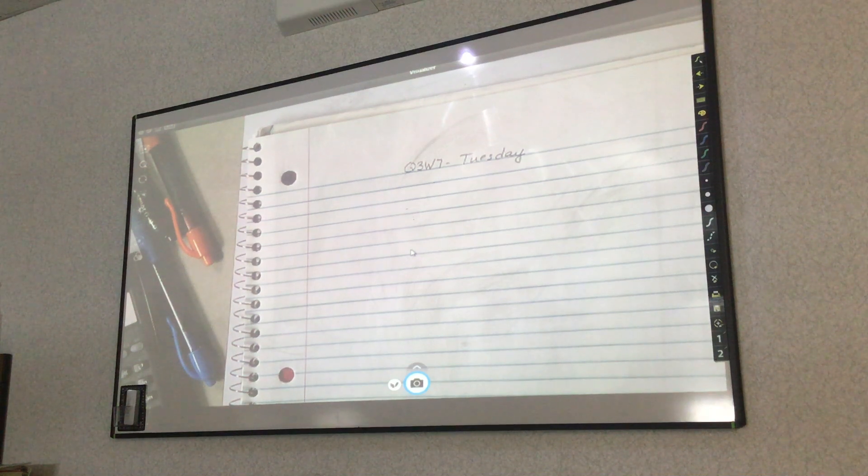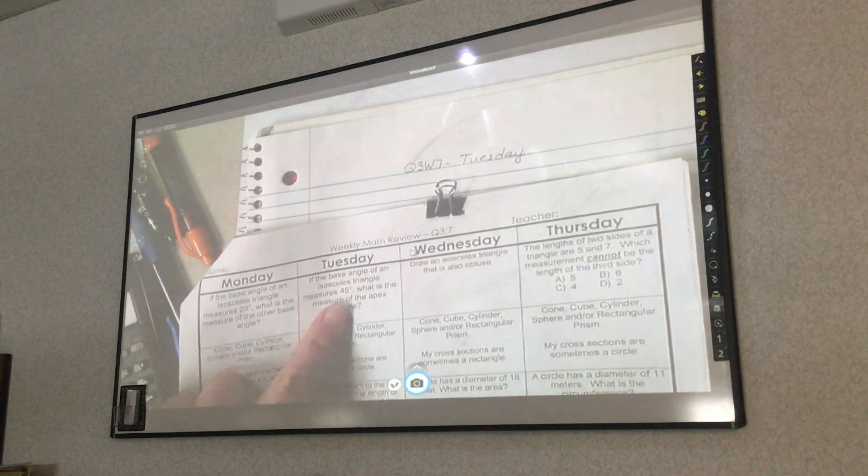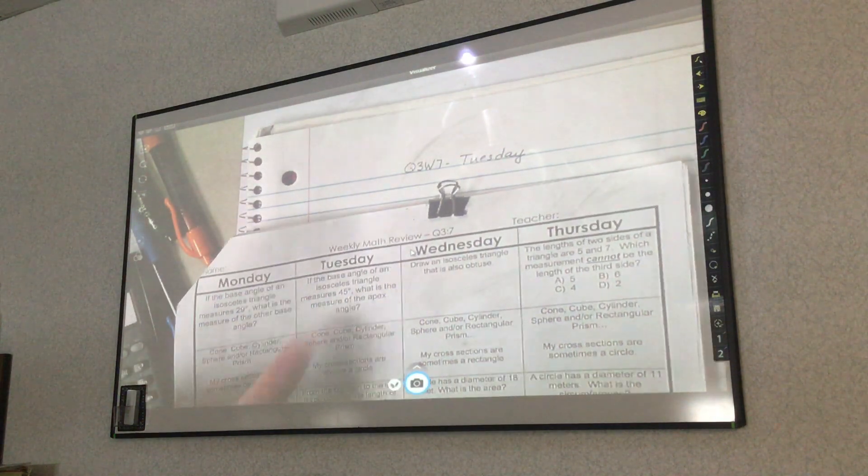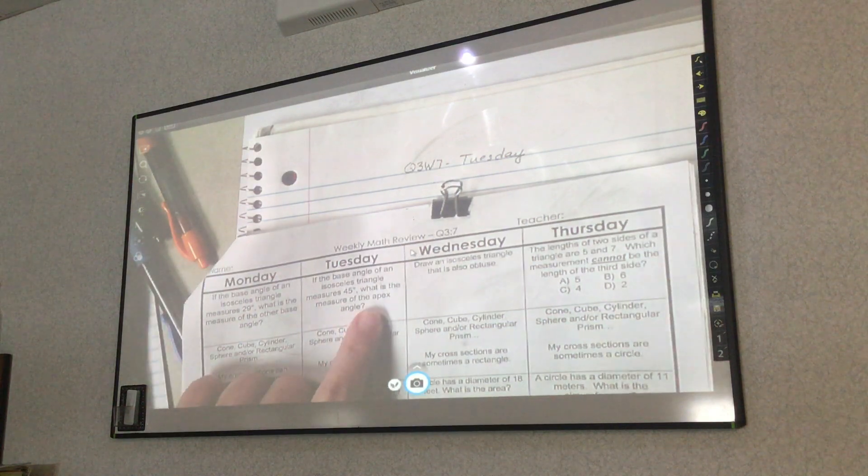This is week 3, or excuse me, quarter 3, week 7 on Tuesday. Number 1 states, if the base angle of an isosceles triangle measures 45, what is the measure of the apex angle?